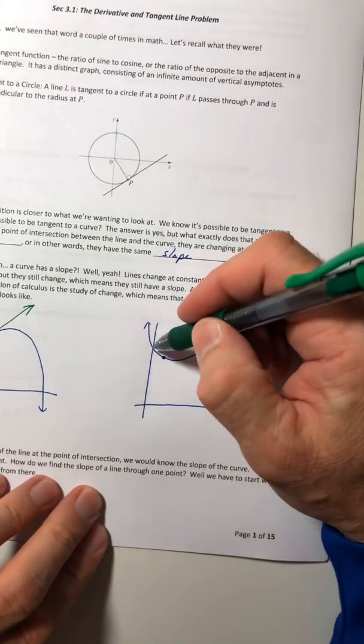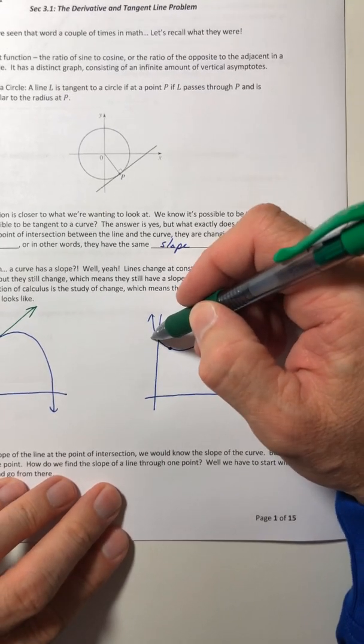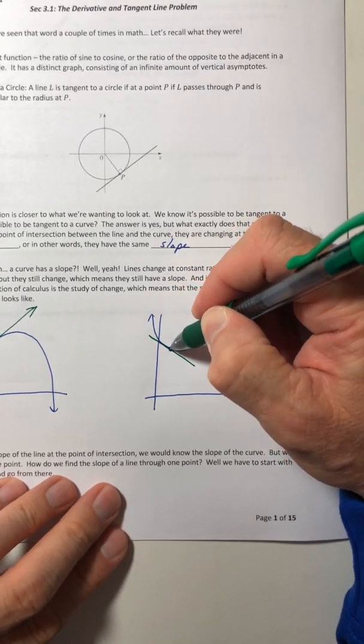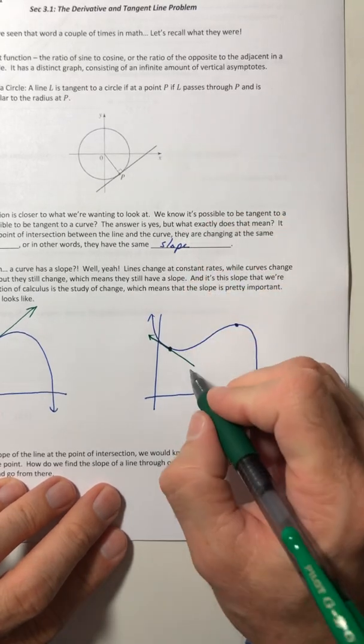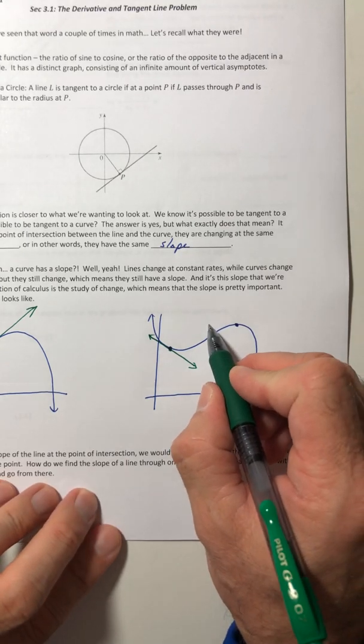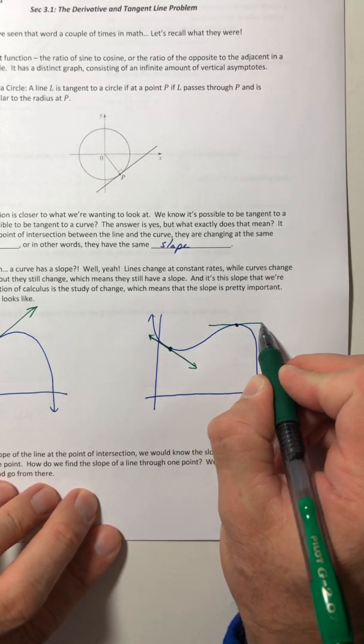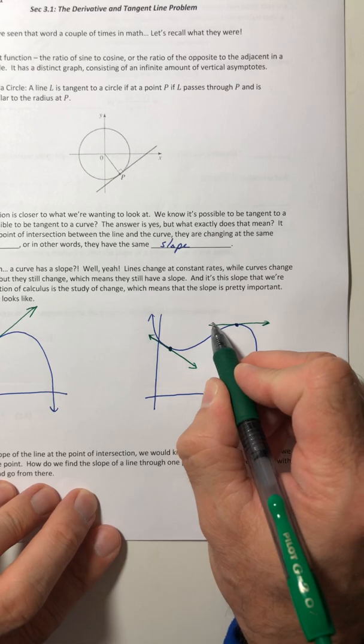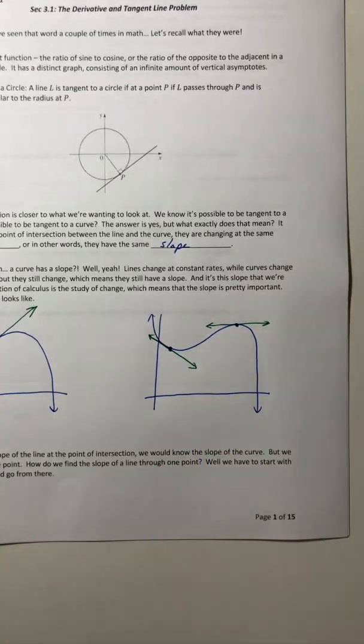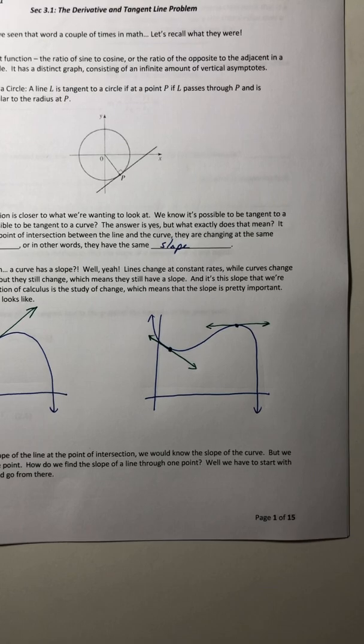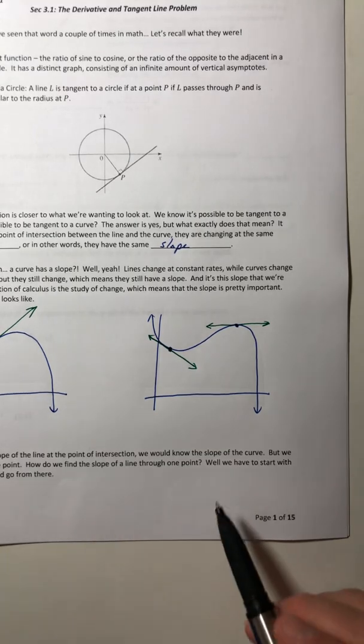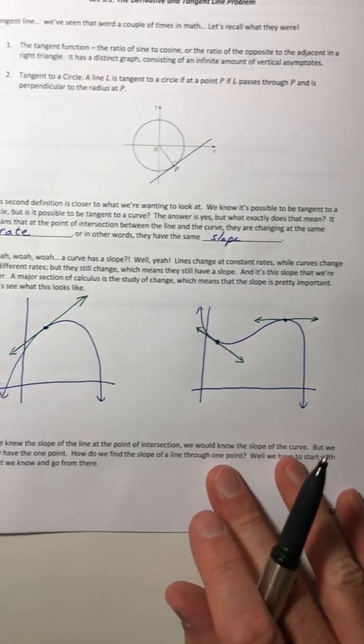So, the slope of the curve at this first point would be kind of like that. It's kind of missed. That's all right. We'll just make a bigger dot. And then this one would have a slope going like the curve's tangent line would be going like that. So, if you knew the slope of the line, the slope of the green lines at that point of intersection, you would know the slope of the curve.